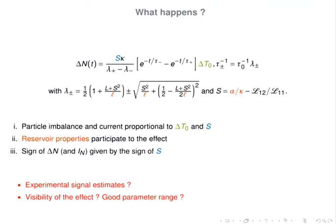In more detail, for this initial condition delta-N as a function of time looks like a difference between two decreasing exponentials with different time constants—the eigenvalues of the transport matrix. It is proportional to the initial temperature difference (we are in linear response) and to the Seebeck coefficient. The sign of the particle current is given by the Seebeck coefficient, potentially allowing observation of a transition between reservoir-dominated physics with a positive Seebeck coefficient and junction-dominated physics with a negative Seebeck coefficient.